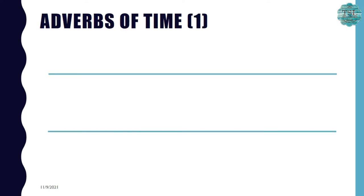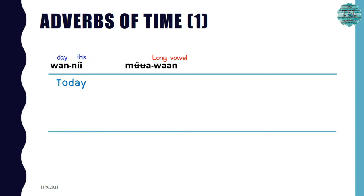Let's start with adverbs of time. The first one is วันนี้. วัน means day, and นี้ is the distance modifier meaning 'this.' So วันนี้ means 'today.' The next one is พรุ่งนี้, which means 'tomorrow.'